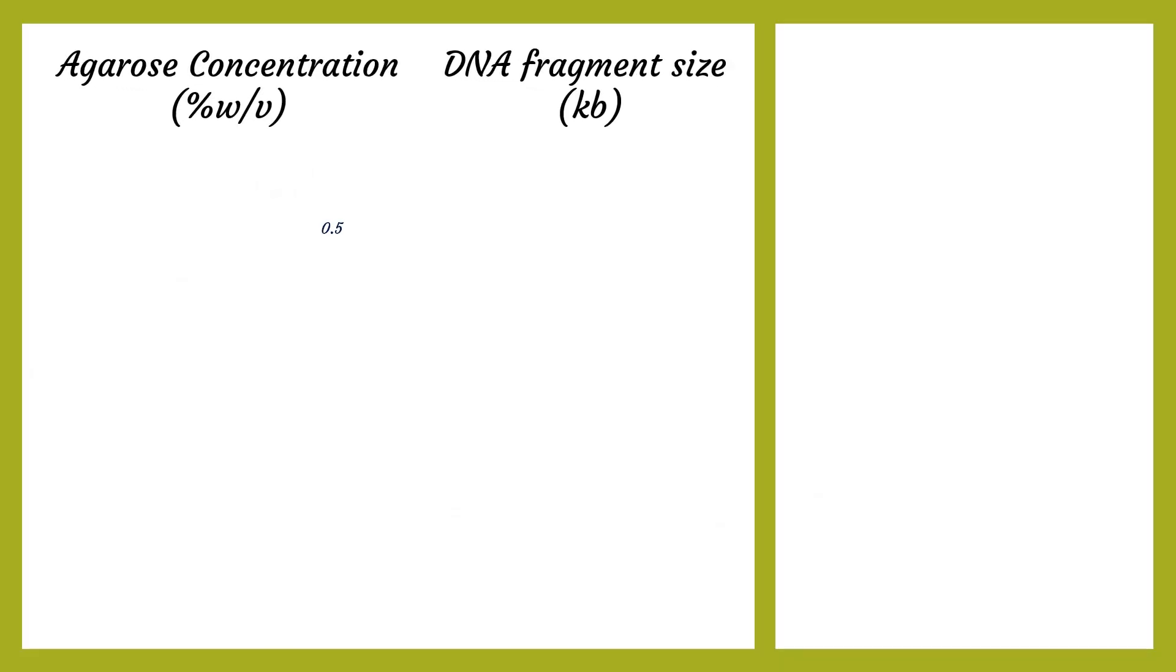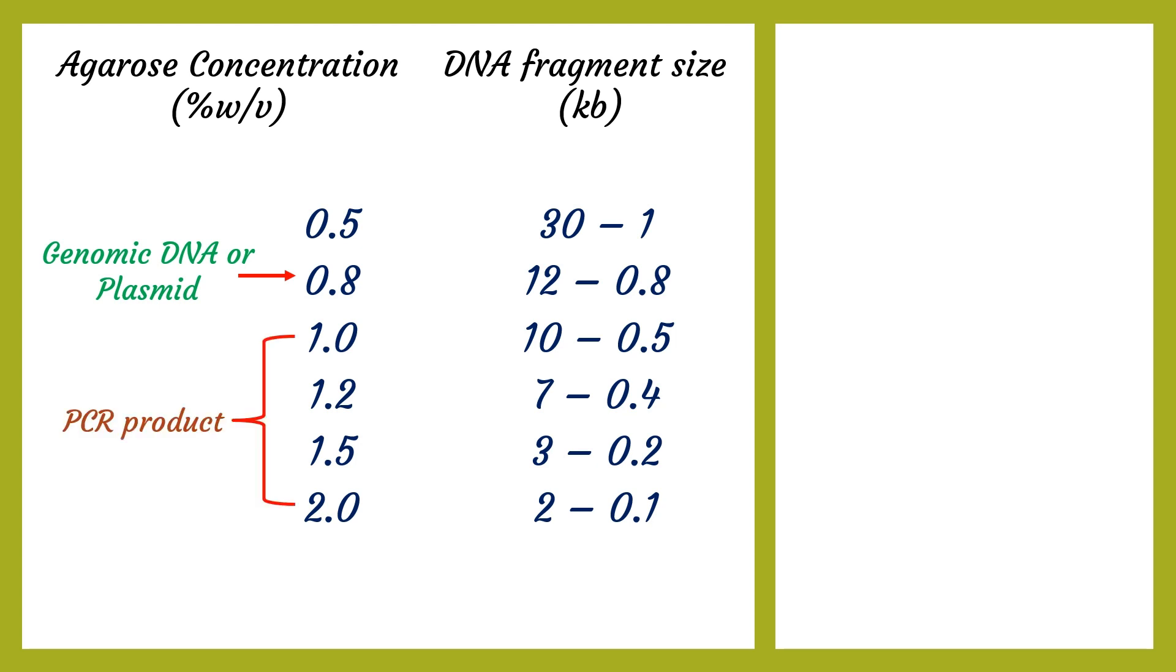The concentration of agarose gel to be prepared is generally determined by the size of DNA to be separated. Like, DNA ranging from 30 to 1 kilobases are best separated using a 0.5% gel, while a 0.8% gel is used for 12 to 0.8 kilobases, and a 1% gel is recommended for 10 to 0.5 kilobases, and so on. Generally, lower agarose concentrations result in larger pore sizes, allowing larger DNA fragments to move more easily.